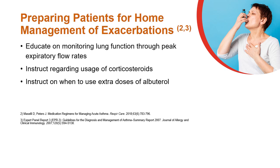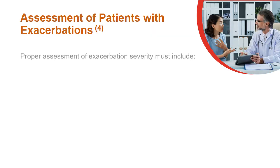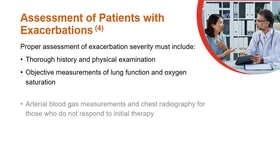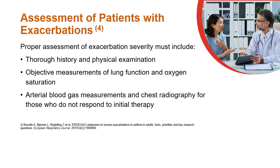Provide instructions regarding usage of corticosteroids and when to use extra doses of albuterol or other short-acting beta-2 agonists. Proper assessment and adequate intervention are crucial to stabilize asthma and alleviate symptoms. Assessment must include a thorough history and physical examination, objective measurements of lung function, oxygen saturation, arterial blood gas measurements, and chest radiography for those who do not respond to initial therapy.